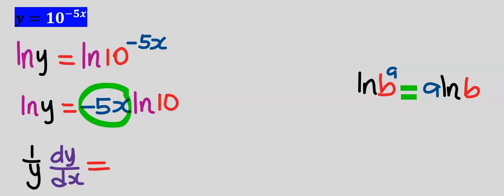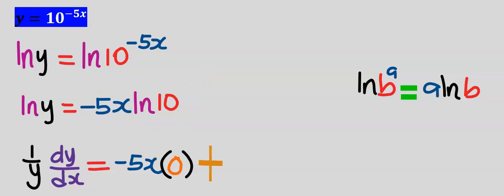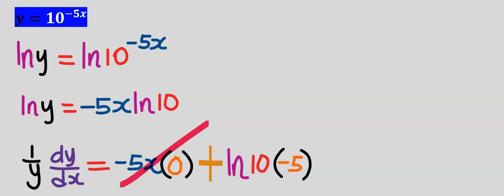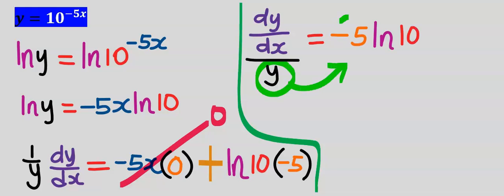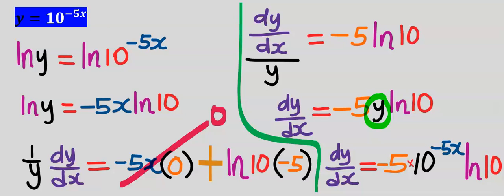Keep minus 5x constant and differentiate the natural log of 10 — differentiating the natural log of any constant gives 0. Introduce a plus from the product rule, keep the natural log of 10 constant, and differentiate minus 5x to get minus 5. Minus 5 multiplied by 0 is 0. Move y from the denominator to the other side to multiply everything, then replace the value of y from the given question — this is our dy/dx.